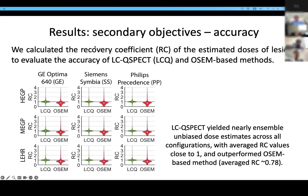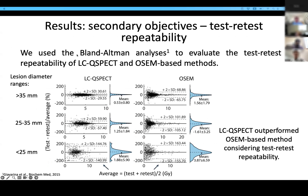We also calculated the recovery coefficient of the estimated dose of lesions to evaluate the accuracy of LCQ-SPECT and OSEM-based methods. As shown in this violin plot of RC values, the LCQ-SPECT yielded nearly unbiased dose estimates across configurations, with RC values very close to one on average, and outperformed the OSEM-based method. Finally, we used Bland-Altman analysis to evaluate test-retest repeatability of the LCQ-SPECT and OSEM-based methods. The data more concentrated to the zero line indicates that LCQ-SPECT outperformed the OSEM-based method considering test-retest repeatability.